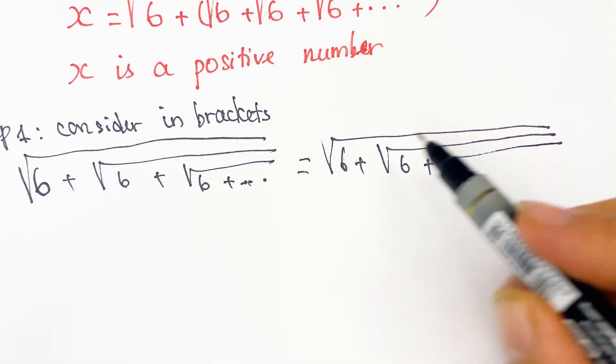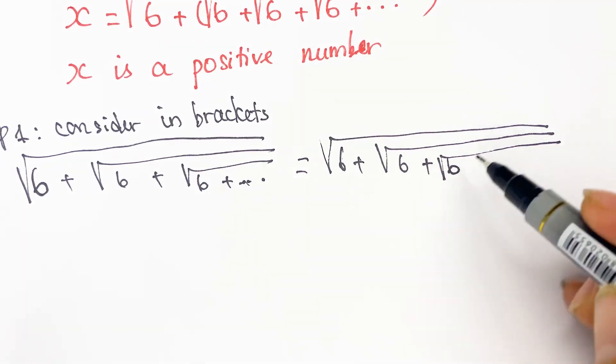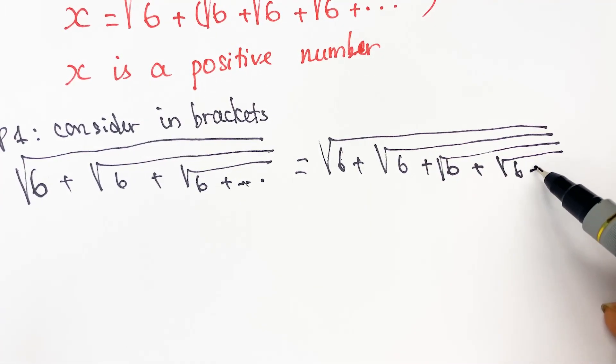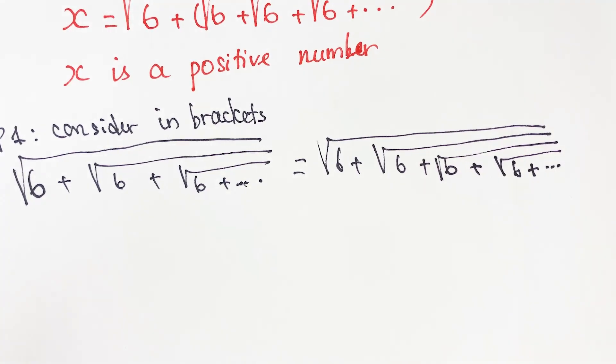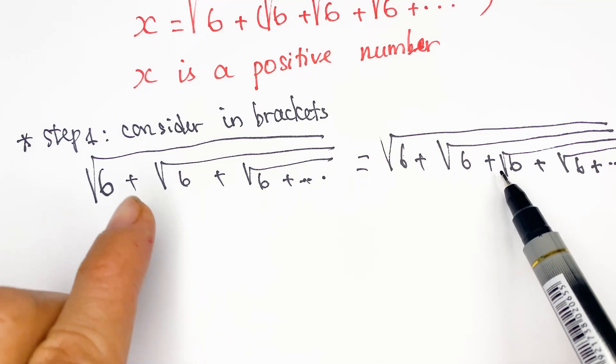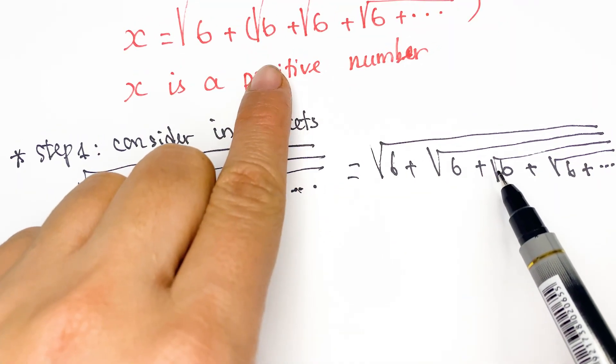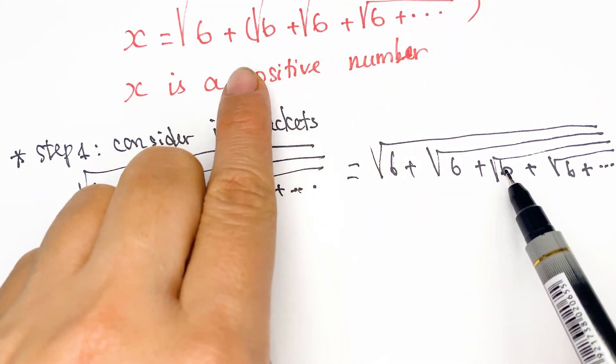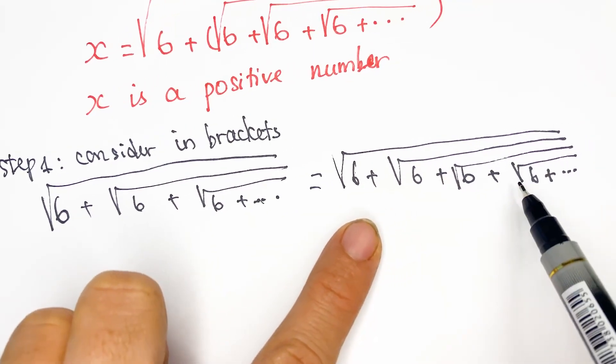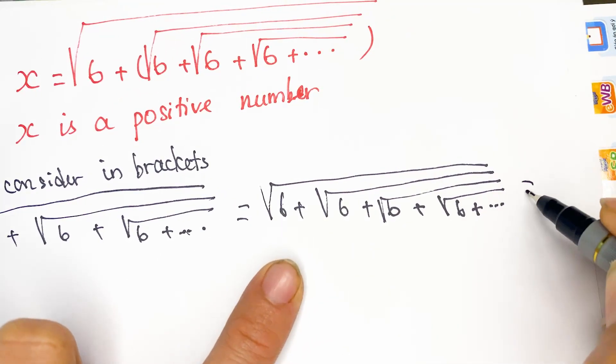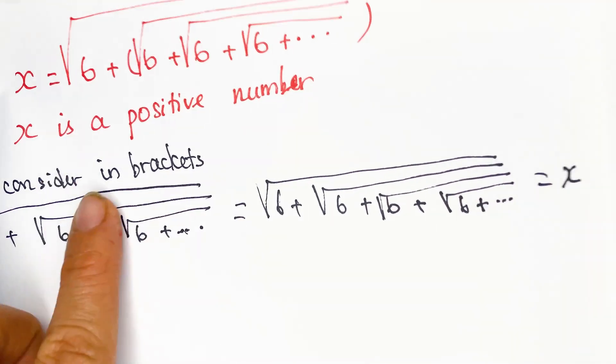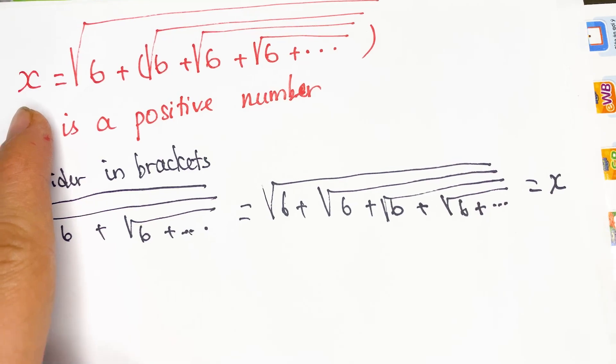And next, plus one more square root of 6 here, and plus square root of 6 and plus x. Everyone can see, it's the same as the right-hand side of the beneficial expression. So it's also equal to x, equal to x here in the beneficial expression.